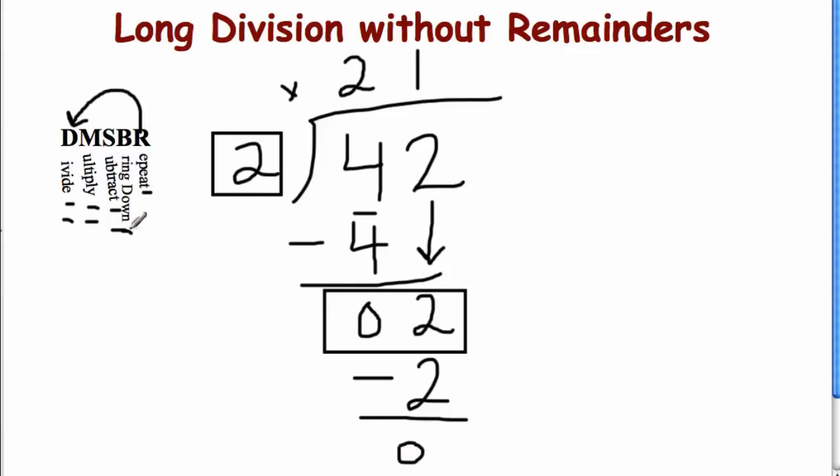And friends, the next step is bring down. But look, there's nothing else to bring down. So you know you are correct in your answer. There's nothing else. So 42 divided by two is 21.